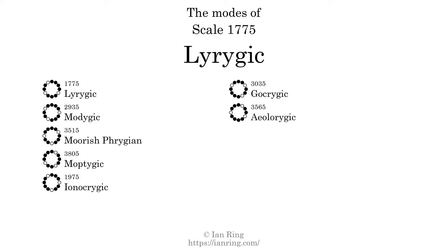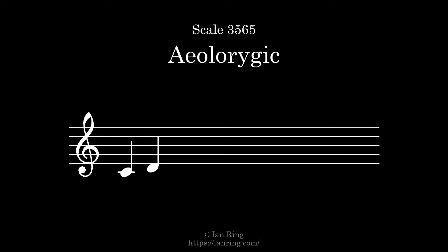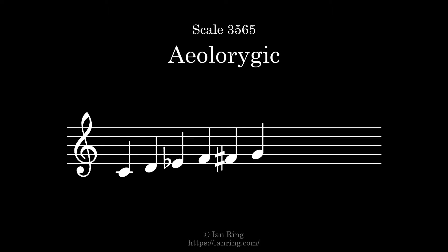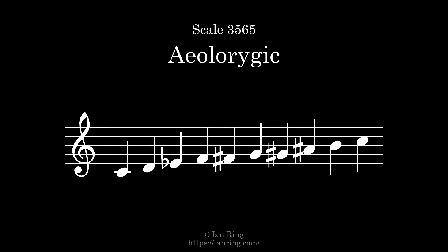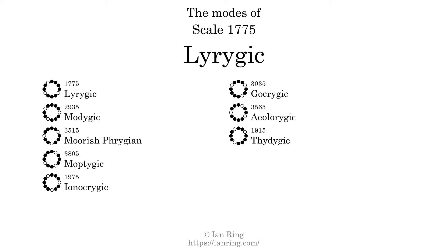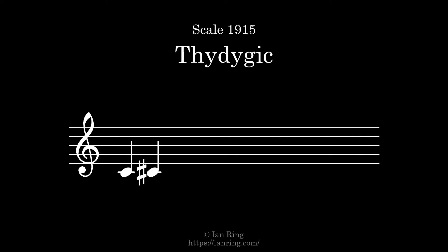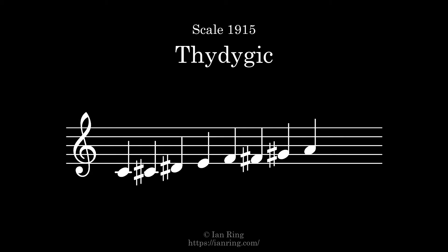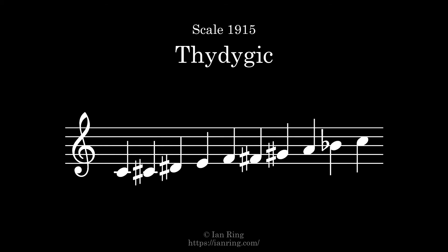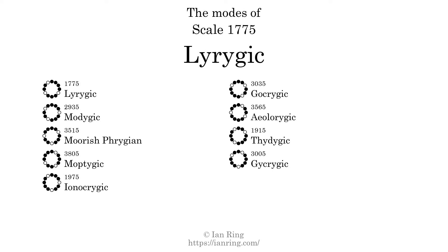The seventh mode is scale 3565, also known as Illergic. The eighth mode is scale 1915, also known as Thydagic. The ninth and last mode is scale 3005, also known as Jacujic. Each sounds like this.